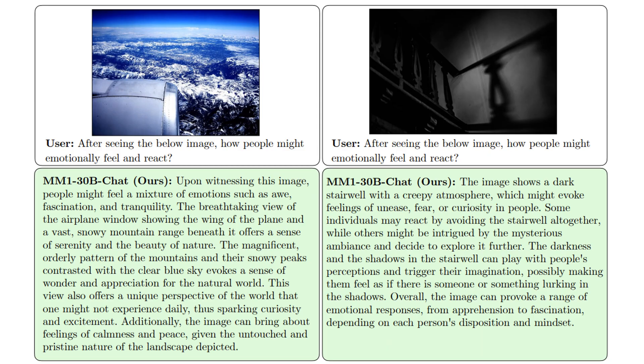Here we see an interesting experiment that showcases capabilities of the MM1 model in understanding human emotions. User presents an image and asks, after seeing the image below, how people might emotionally feel and react. In the left image, which is a nature scene from window of an airplane, the MM1 model describes different senses that might be evoked by this image in human, such as awe, fascination, and tranquility. In the right image, which is a dark stairwell and shadow, can evoke feelings of unease, fear, or curiosity in people, according to MM1.